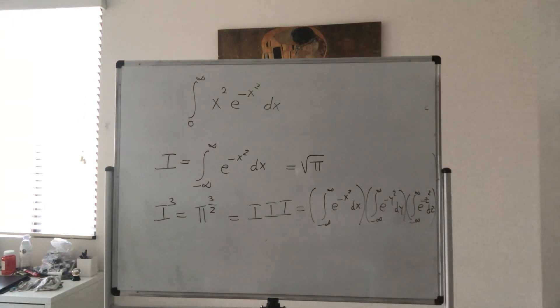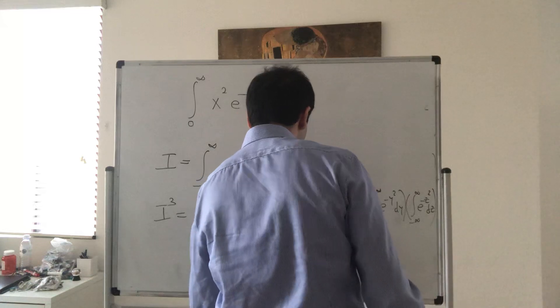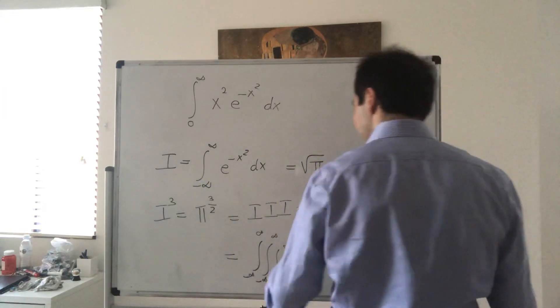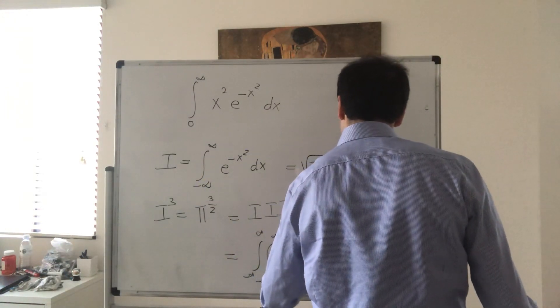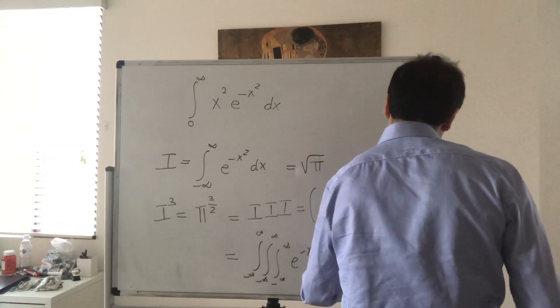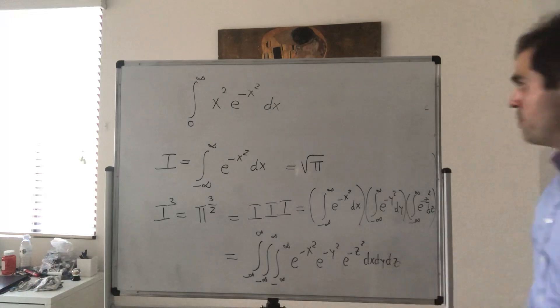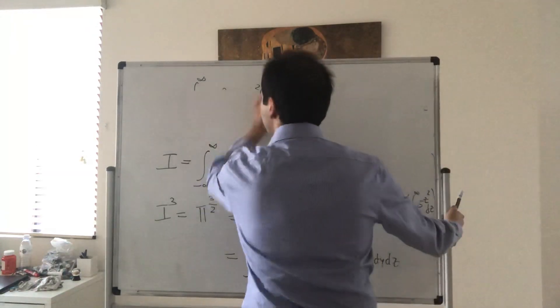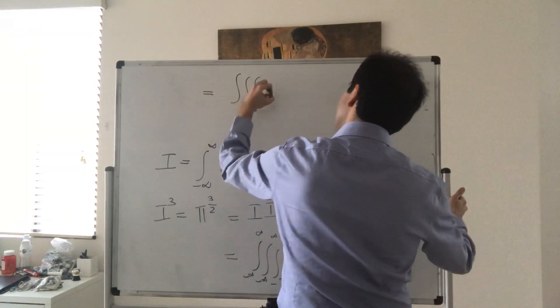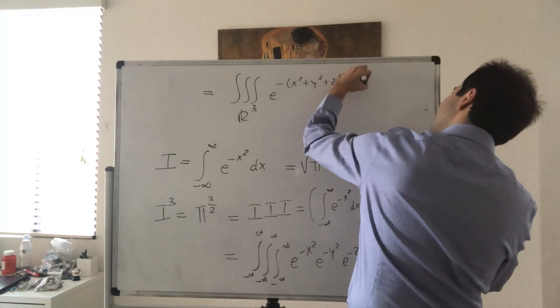Okay, very good. And then what we get—that just becomes the triple integral from minus infinity to infinity, minus infinity to infinity, minus infinity to infinity of e to the minus x squared, e to the minus y squared, e to the minus z squared, dx dy dz, which just ends up becoming the integral over r3 of e to the minus x squared plus y squared plus z squared, dx dy dz.